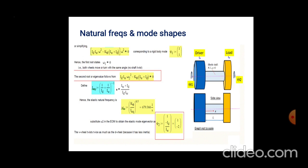The natural frequency formula is the square root of K theta divided by the equivalent inertia I, multiplied by 0.5. Taking the square root of this expression gives the natural frequency. For the driver and load system, psi 1 equals 1 and 1. Omega squared in the equation of motion is obtained from this.